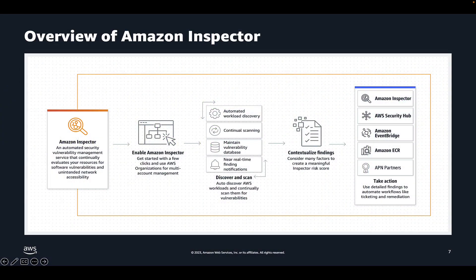Amazon Inspector is a vulnerability management service that continuously scans AWS workloads for software vulnerabilities and unintended network exposure across your entire AWS organization. Once activated, Amazon Inspector automatically discovers all of your EC2 instances, container images in ECR, and AWS Lambda functions at scale, and continuously monitors them for known vulnerabilities.